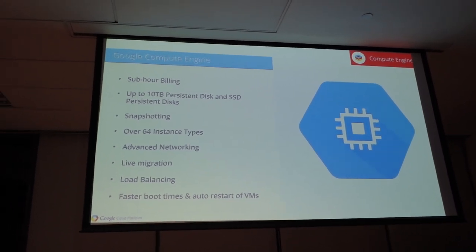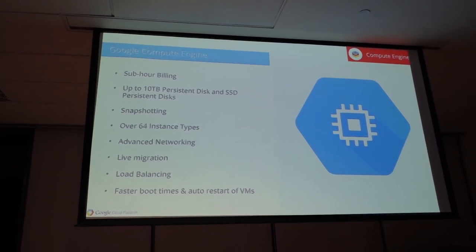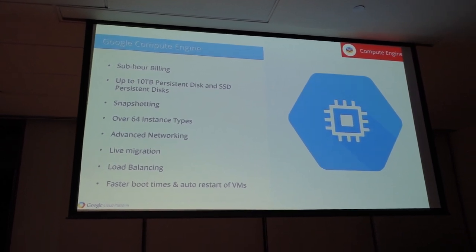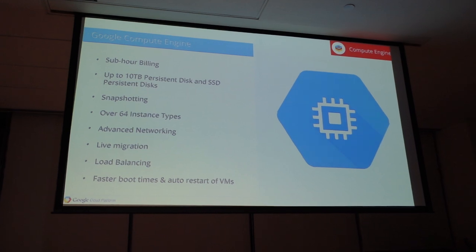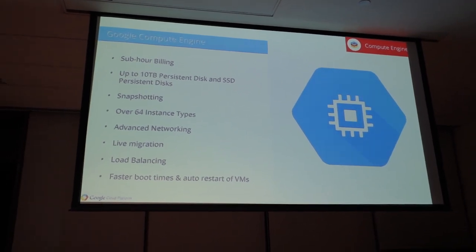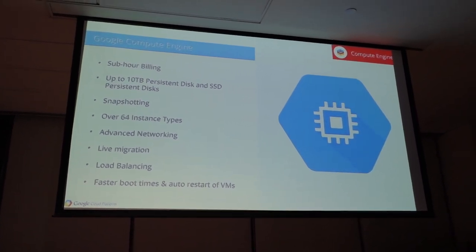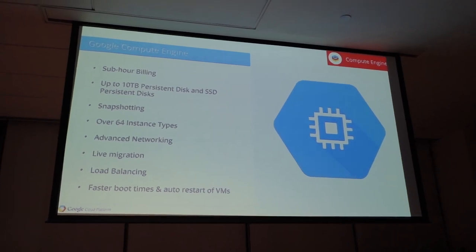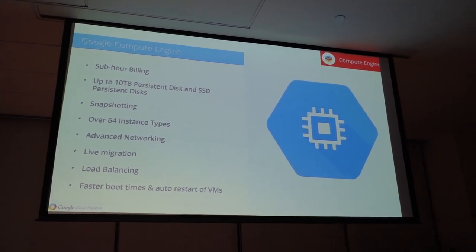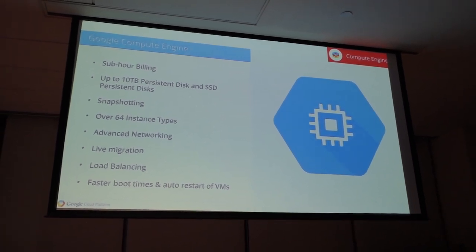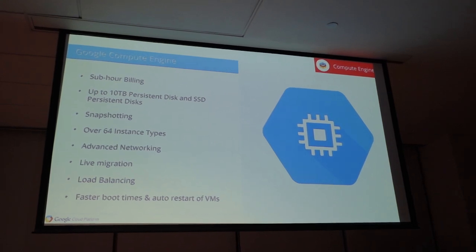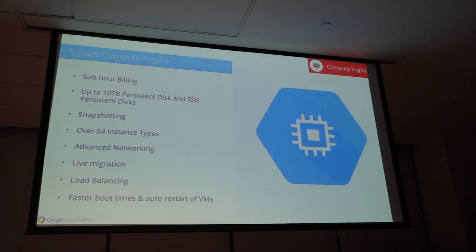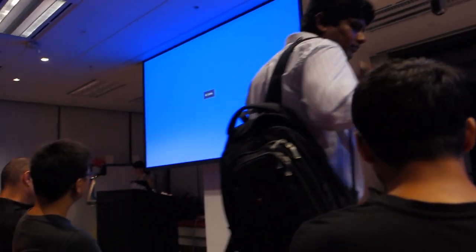We have advanced networking including VPNs. We also have live migration, which is something very unique to us. Live migration means if you have an instance running in a particular zone or data center, and we're doing maintenance — say we're doing a patch in that zone — rather than sending you an email saying you need to move your application somewhere else, we automatically move your instance from one zone to another zone and back again. You don't need to do anything. We also have load balancing: network load balancing that routes traffic to VMs, and HTTP load balancing at layer 7 that routes to different zones based on the locality of the user.